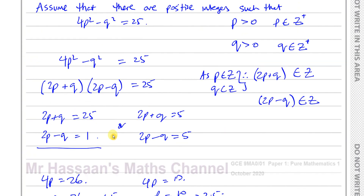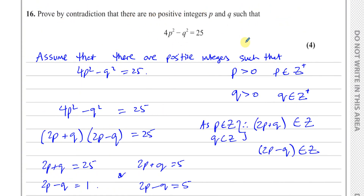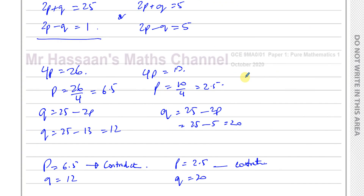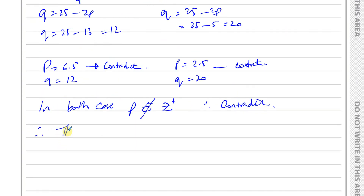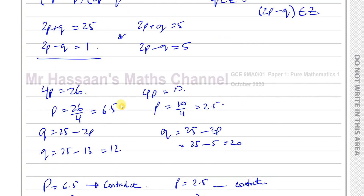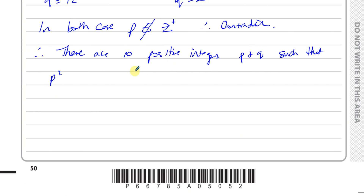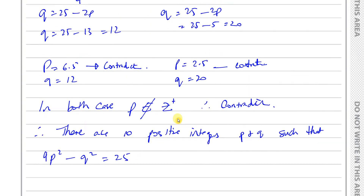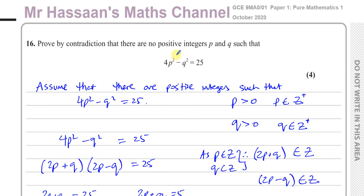Therefore, we can say we have a contradiction — in both cases P is not an element of the positive integers. So therefore, we can say there are no positive integers P and Q such that 4P² minus Q² equals 25. That's what we've just proved here — there are no positive integers P and Q such that 4P² minus Q² equals 25.